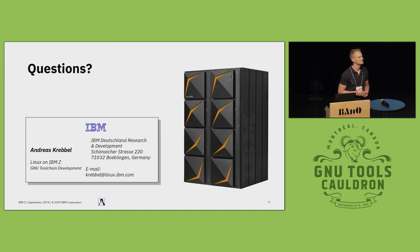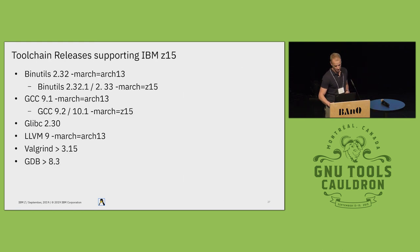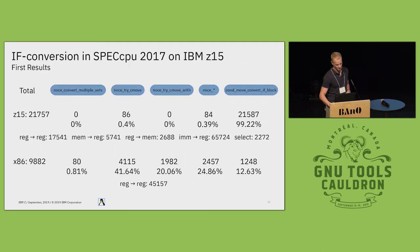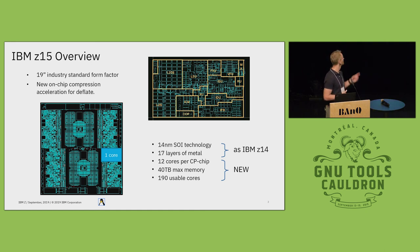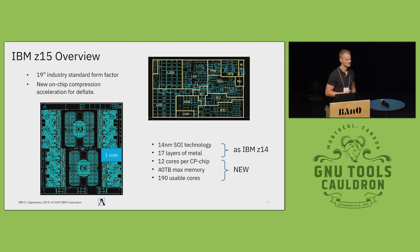Q: In a nutshell, what's the customer benefit of Z15 over Z14? A: There is increased performance — about 14% I think. There are new features: elliptic curve cryptography is an important one, and the on-chip compression is a really big feature for Z15 and also a complicated one. The 19-inch rack size is a practical improvement. And there's more memory, more usable cores, and all of that.